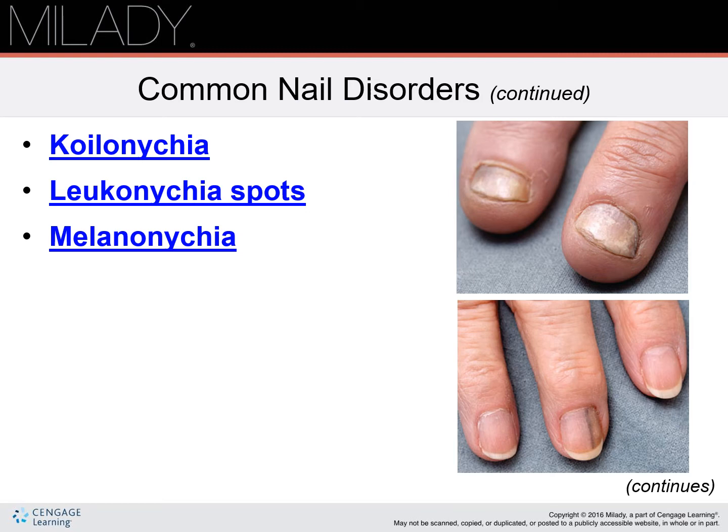Melanonychia is darkening of the fingernails or toenails. This may be seen as a black band within the nail plate extending from the base to the free edge. In some cases, it may affect the entire nail plate. This is a fairly common occurrence and considered normal in people of color, but could be indicative of a disease condition.